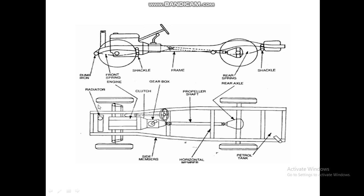The top view of the Chassis shows the radiator, clutch, gearbox, propeller shaft, rear axles, and petrol tank. Without a petrol tank the vehicle cannot run.